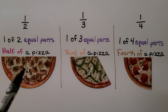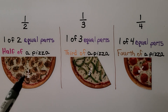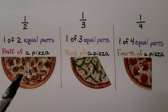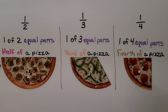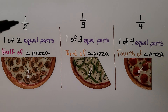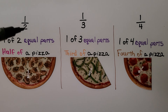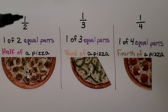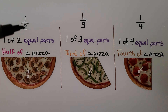Here we have half of a pizza — it's one of two equal parts. It's half. We write it with a one, a bar, and then the two. It means one of two equal parts.